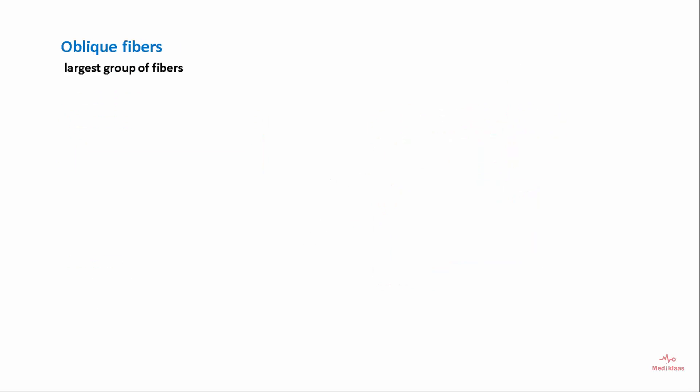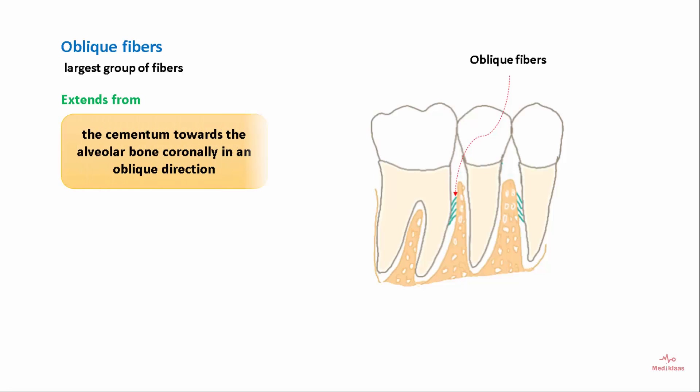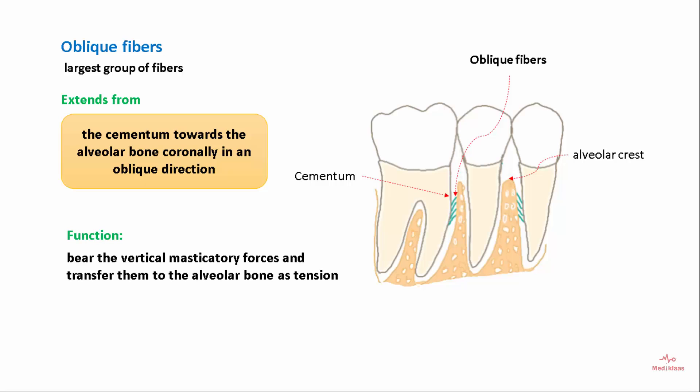The oblique group of fibers is the largest group and forms the bulk of the PDL. They extend from the cementum towards the alveolar bone coronally in an oblique direction. Their function is to bear the vertical masticatory forces and transfer them to the alveolar bone as tension.